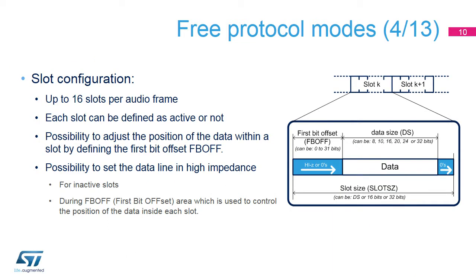The SAI is able to handle up to 16 slots, and each slot can be individually activated or not. The inactive slots can be set in high impedance, or high Z. The slot size is always bigger than or equal to the data size. The SAI allows control of the position of the data inside each slot, and to set the unused parts of the slots to high Z if needed. This function can be helpful when the data line is shared between several devices.